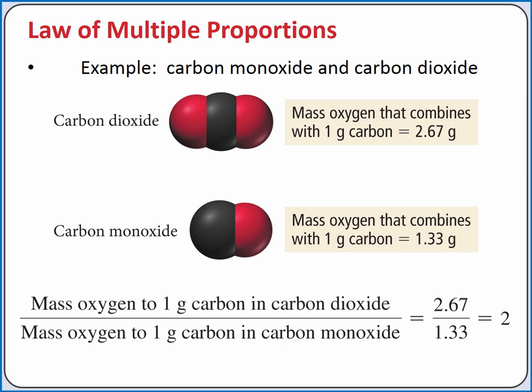If my sample of carbon dioxide was just big enough to have 1 gram of carbon in it, the sample would have 2.67 grams of oxygen in it. For my sample of carbon monoxide, if it was just big enough to have 1 gram of carbon, the sample would have 1.33 grams of oxygen in it.